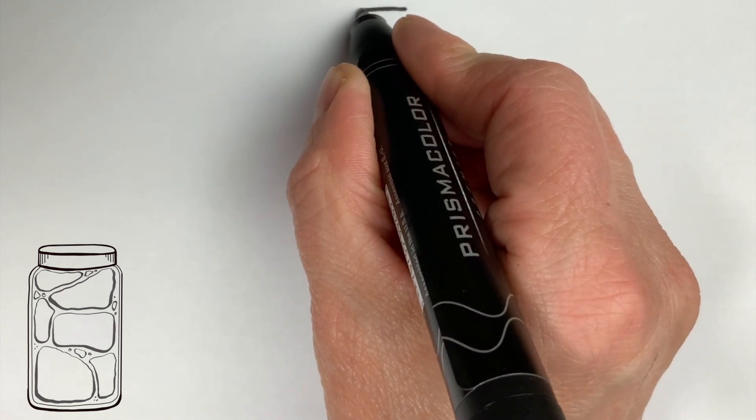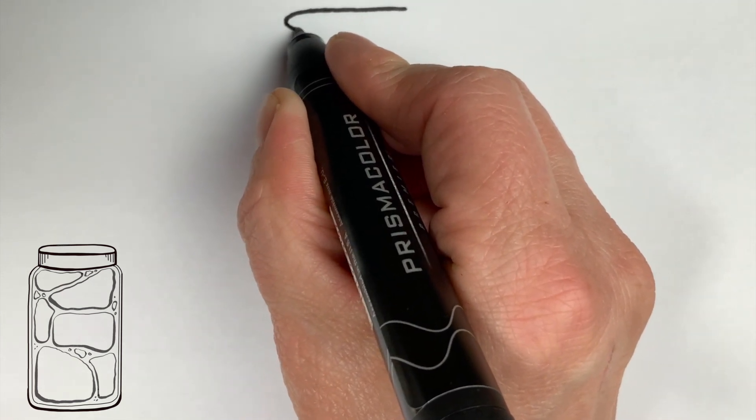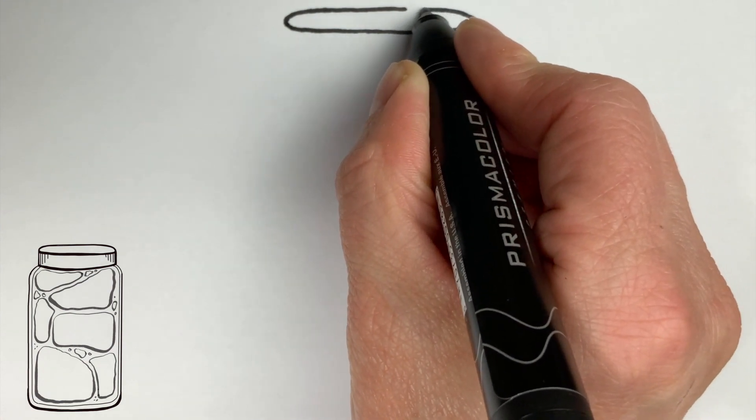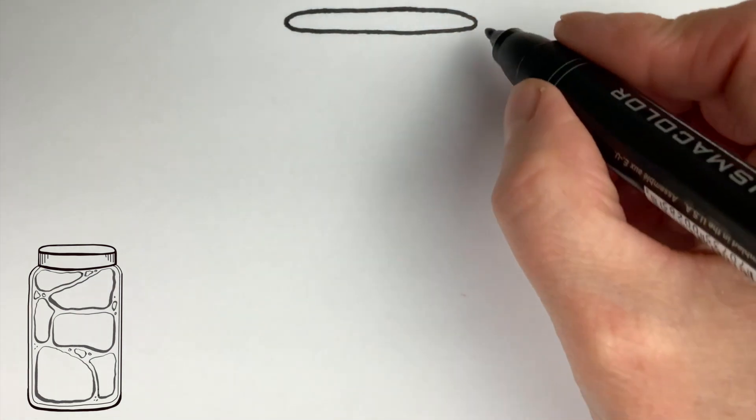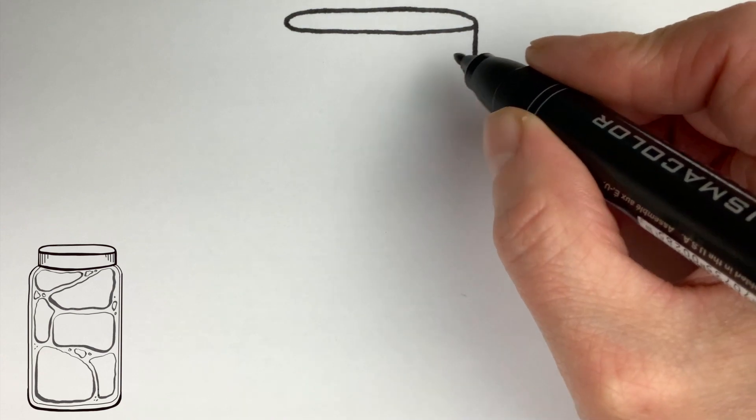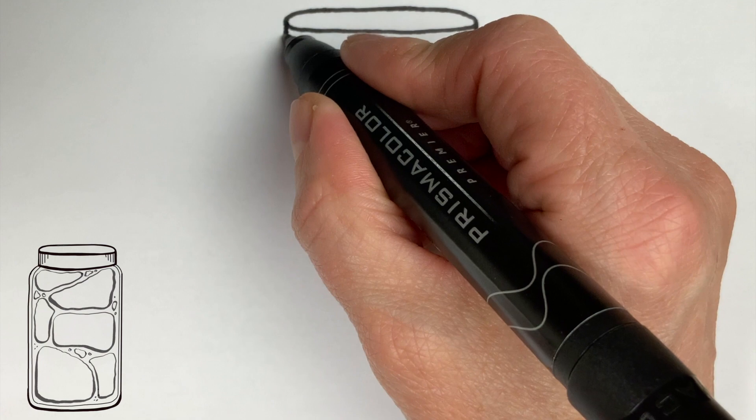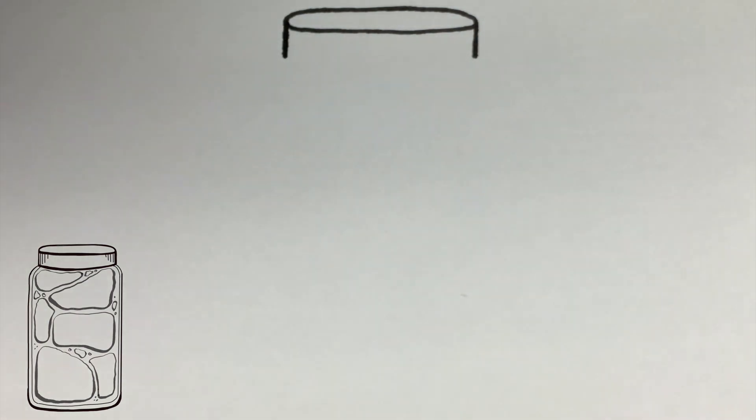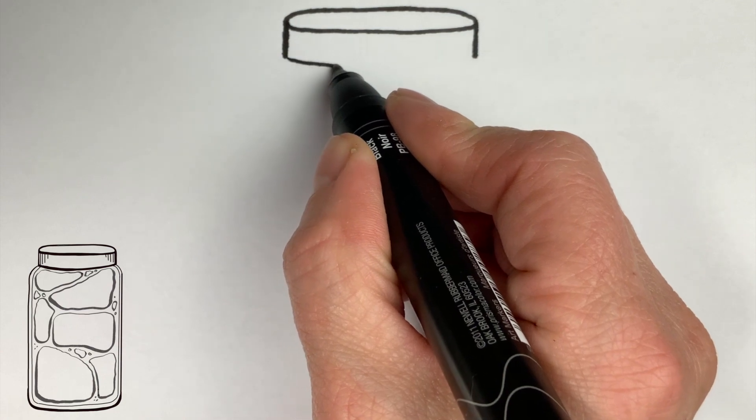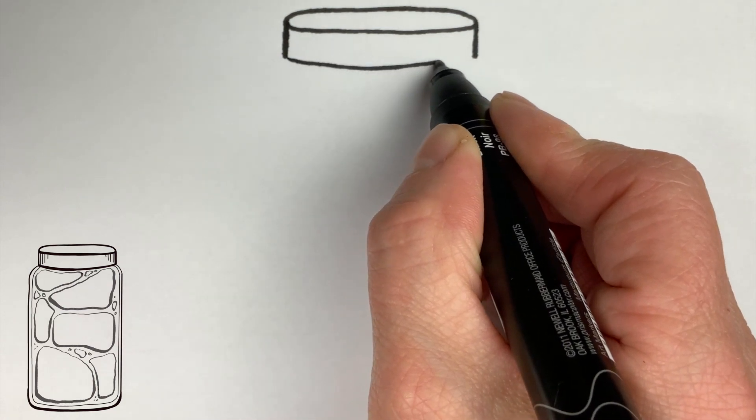So we're going to start with making the top with an ellipse and then the two vertical lines down from each side of the ellipse and a line that gently follows the curve of the bottom of the ellipse.